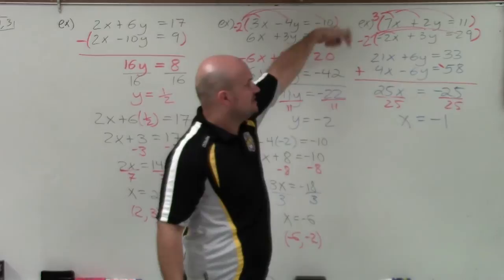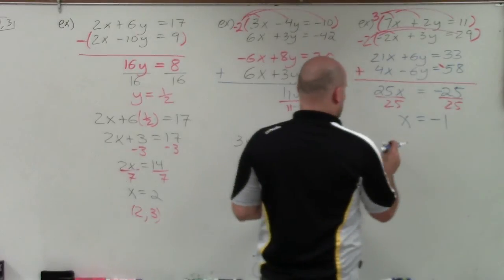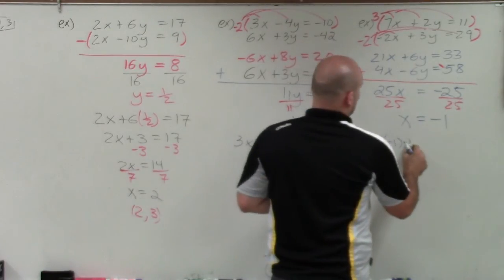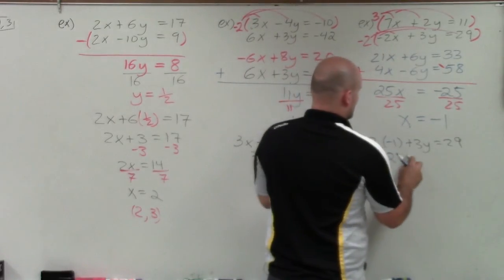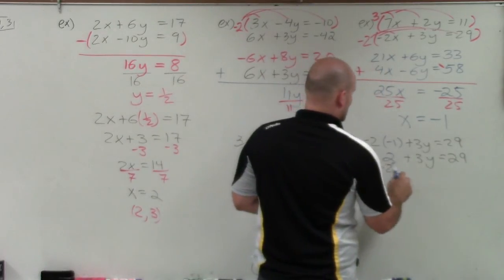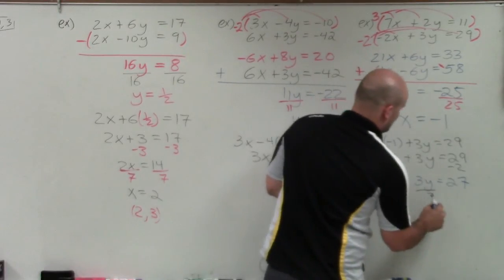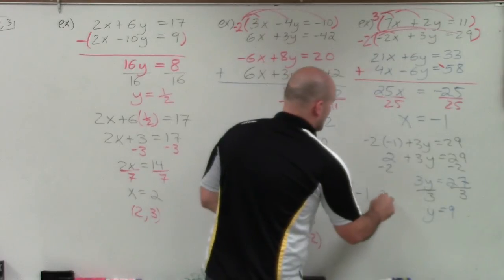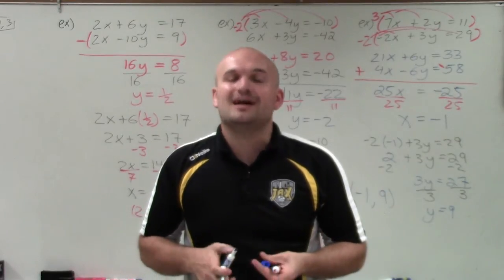Now take the value of x and plug it into one of the equations. Let's use the second equation: negative 2 times negative 1 plus 3y equals 29. Simplifying: 2 plus 3y equals 29. Subtract 2: 3y equals 27. Divide by 3, and y equals 9. Therefore, my solution point is negative 1 comma 9 for this problem. That is how you solve a system of equations using elimination. Thanks.